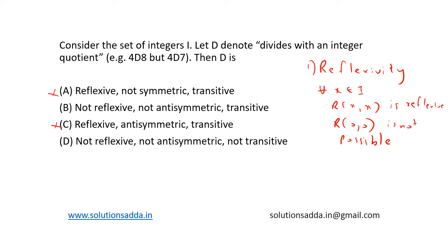So let's see the other properties. The second property is symmetric. For symmetric, for all x belongs to I, R(x,y) and R(y,x) is symmetric, and clearly the above relation cannot be symmetric. Because consider the example: (1,2).